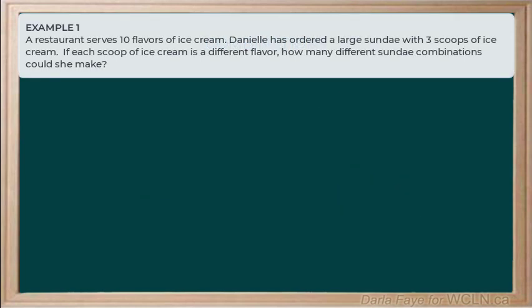Alright, let's dig into an example. It says, a restaurant serves 10 flavors of ice cream. Danielle has ordered a large sundae with 3 scoops of ice cream. If each of her scoops is a different flavor, they want to know how many different ice cream combinations that Danielle could make. So, just as per usual, let's start by identifying our total number of objects. So, in this case, we have 10 possible flavors to choose from. And that means that n is going to be equal to 10. We are going to choose 3 of those flavors to create an ice cream sundae combination. So, r is going to be equal to 3.